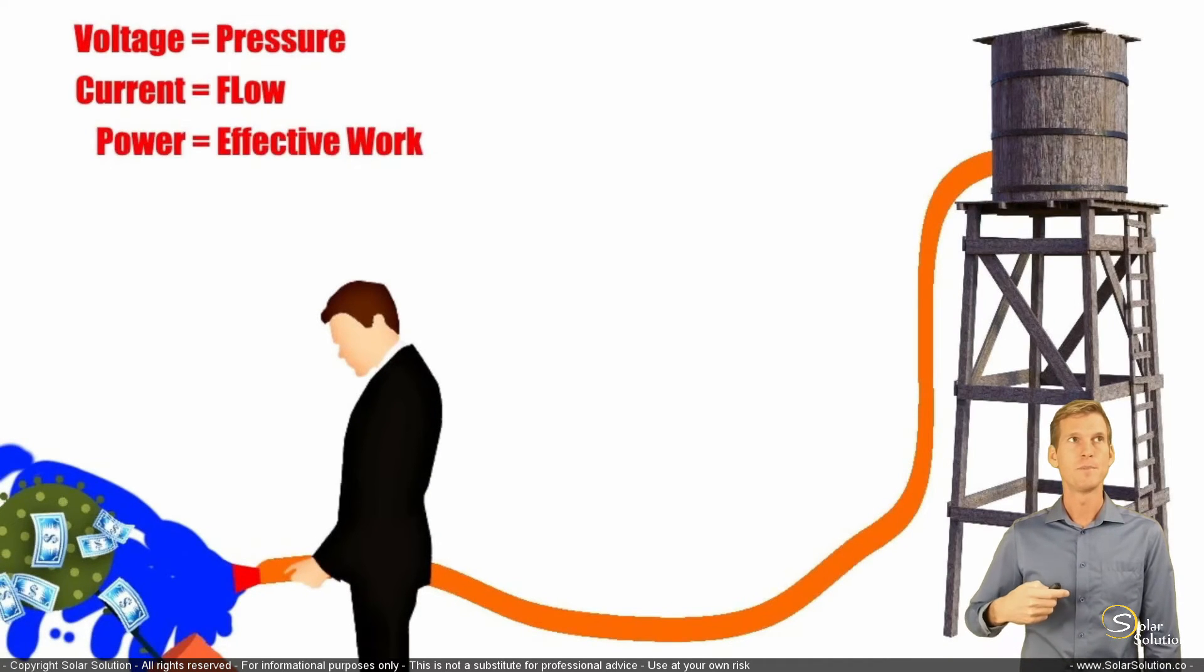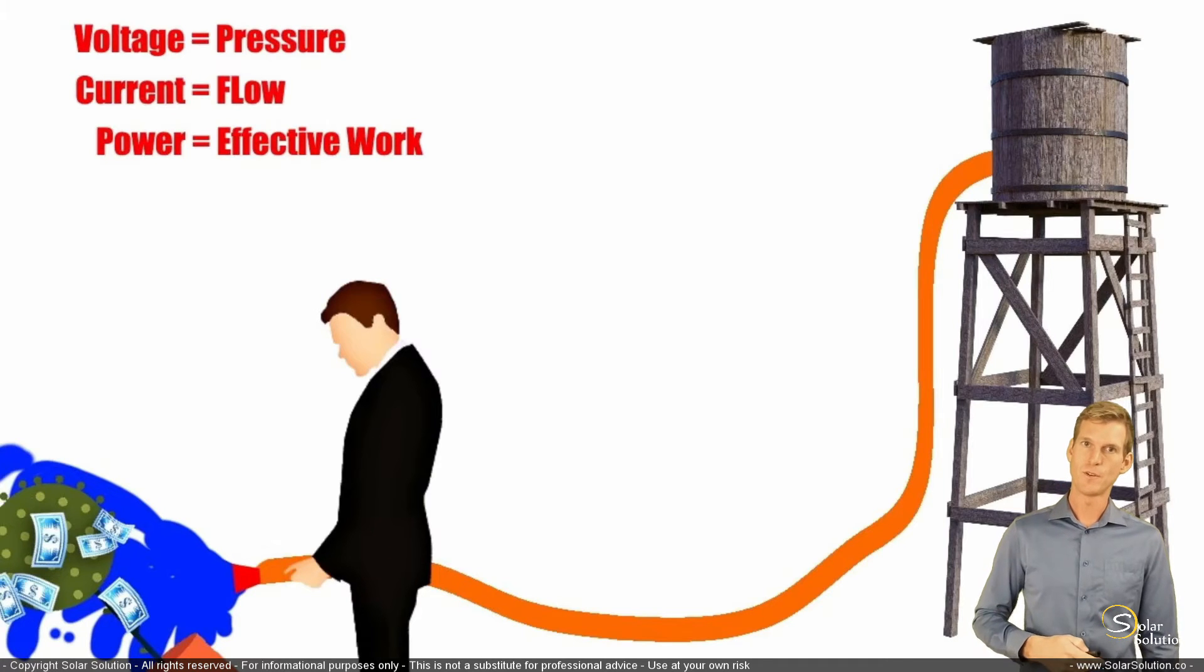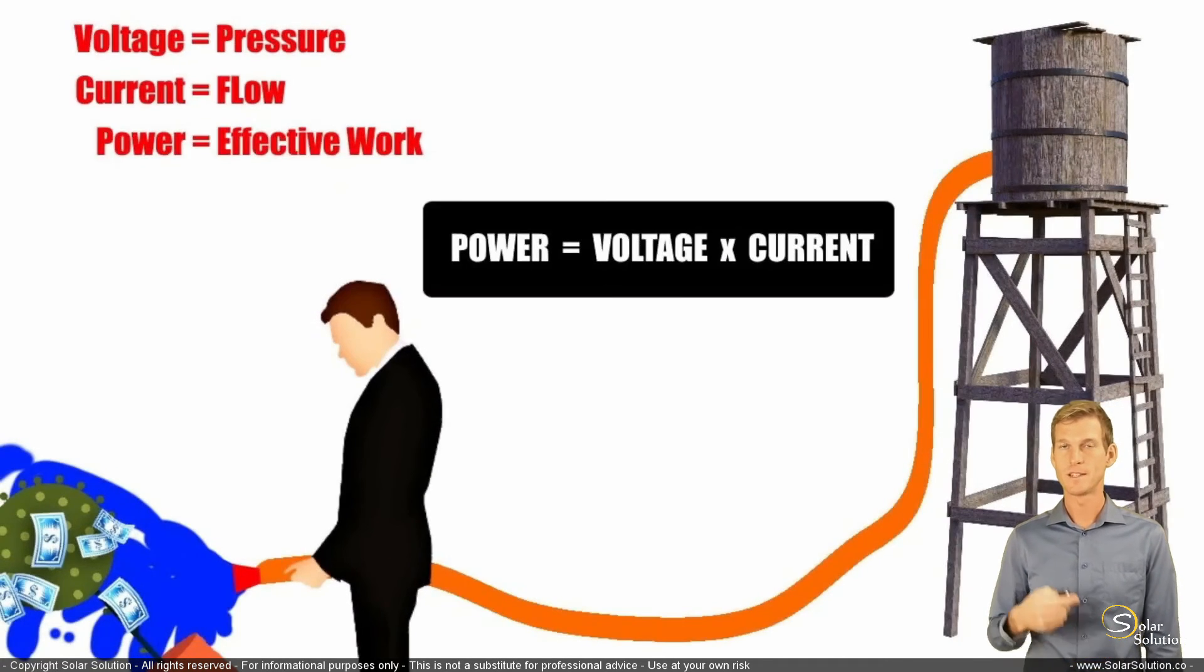Because power is the result of both voltage and current. Power is the final product. It is the effective work that you're getting from your electricity, so from both the voltage and the current. So power is the result of voltage times current. That's how you calculate it. You multiply your voltage times your current and then you get the power in watts or kilowatts.